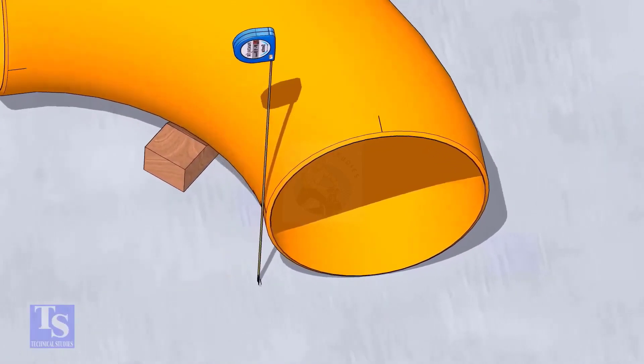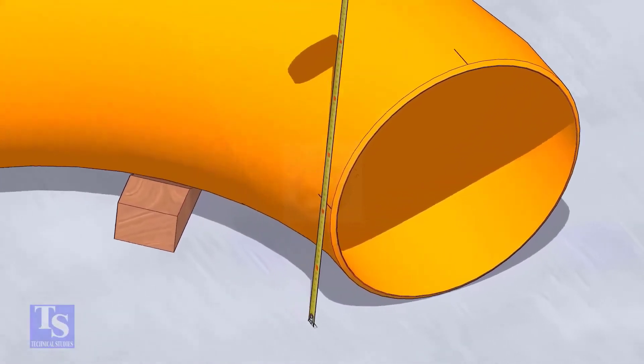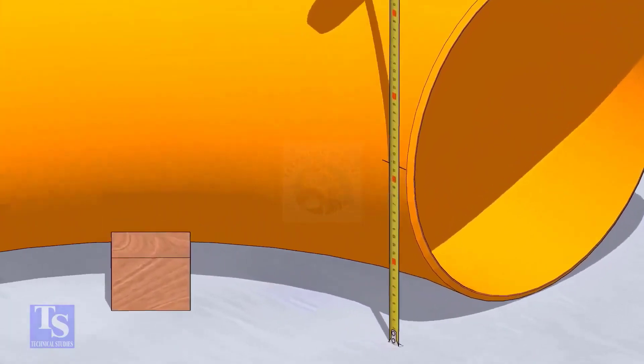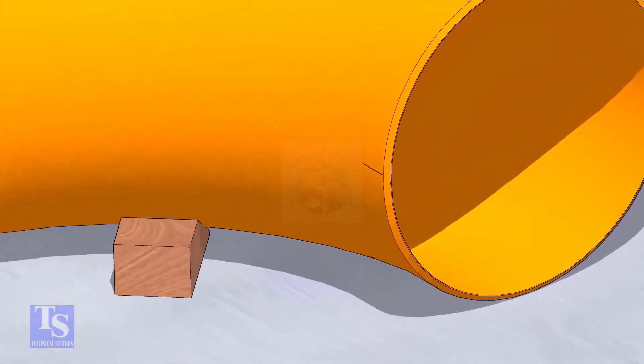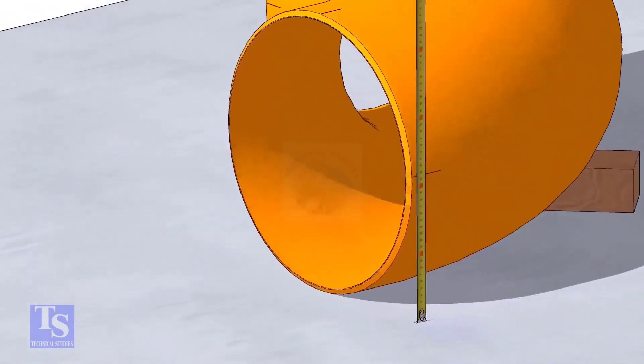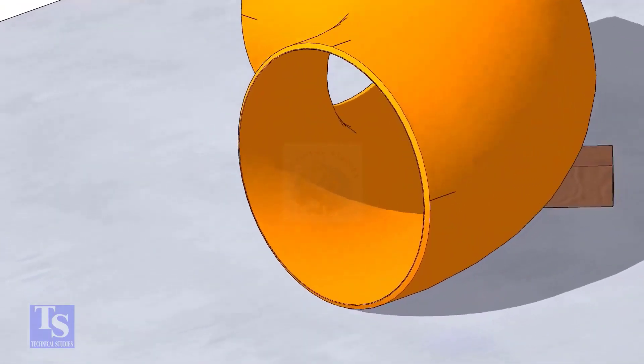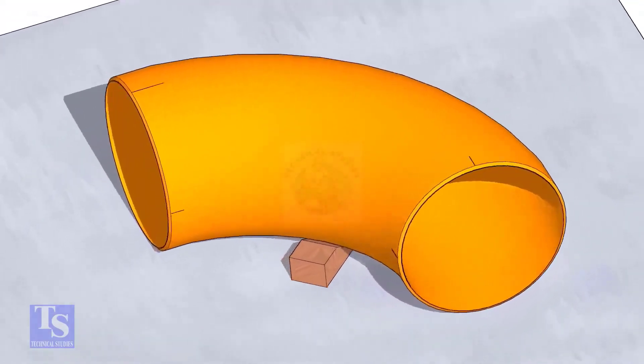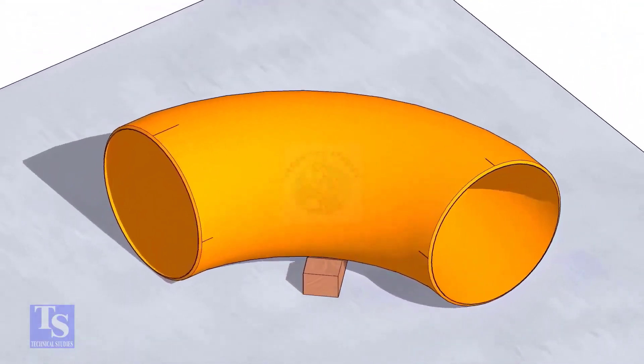Mark half diameter from the plate to the elbow on both sides as shown. Repeat the process and mark the quarters on the other end of the elbow. Rotate the elbow and mark the bottom side quarter also.